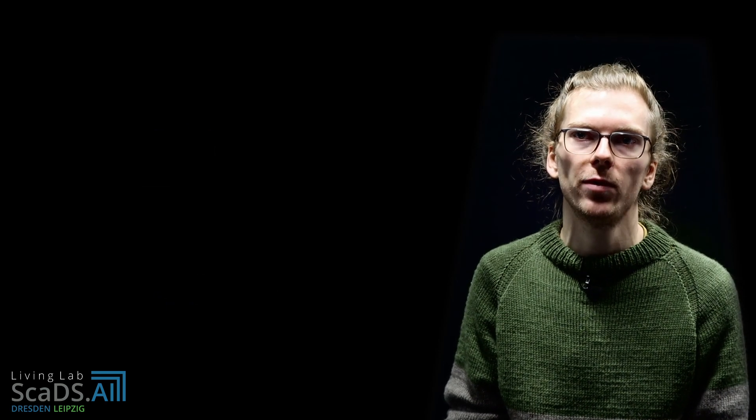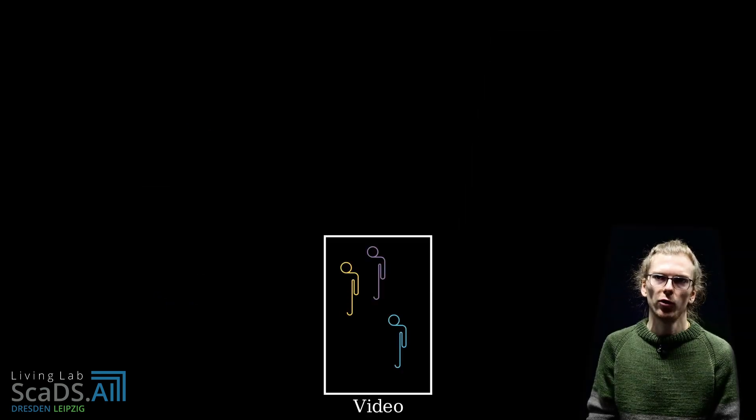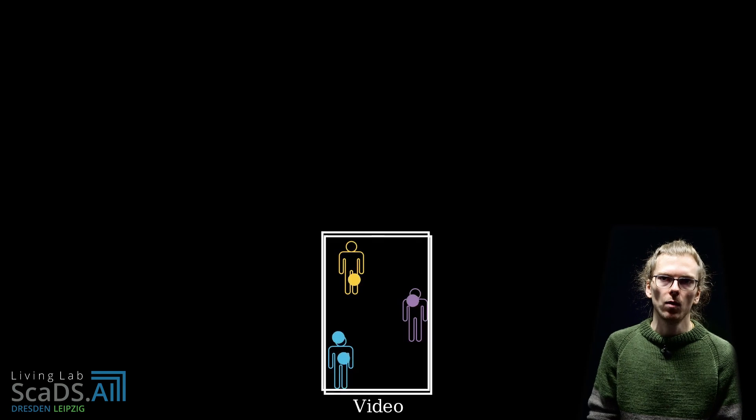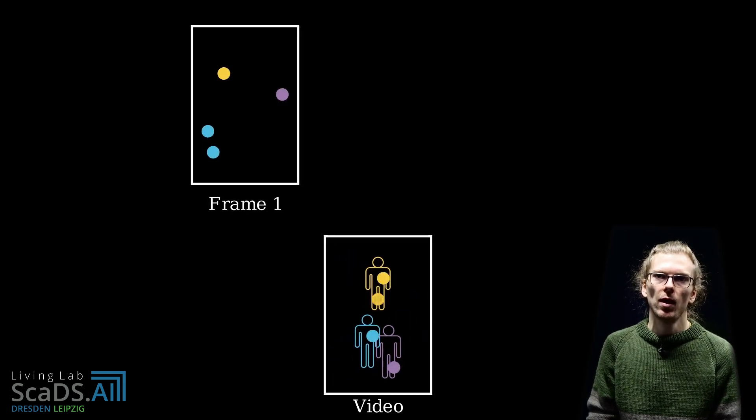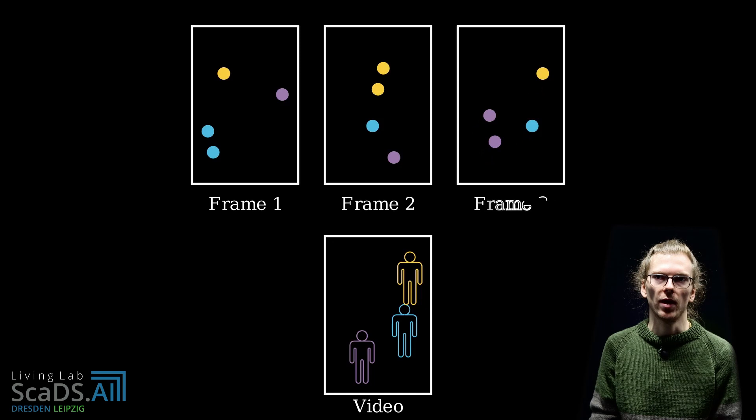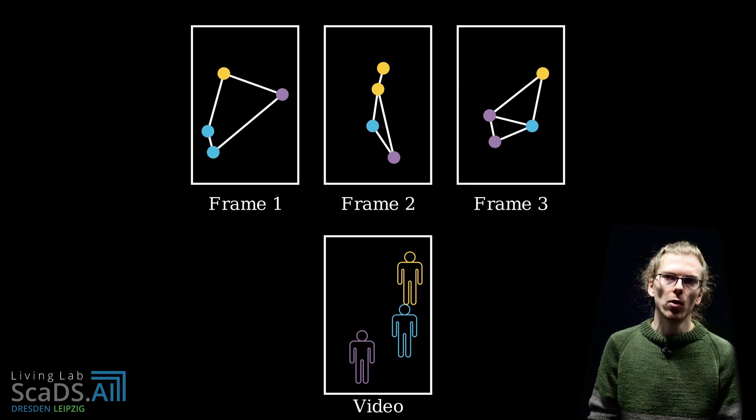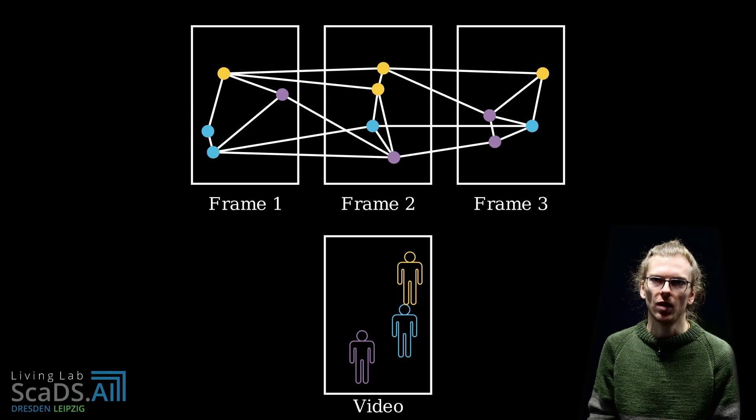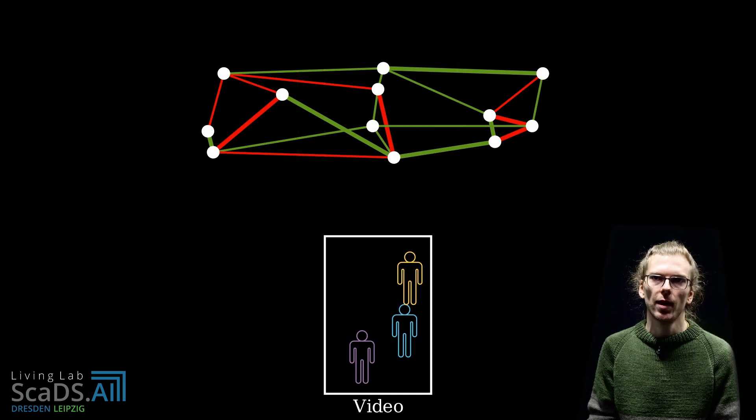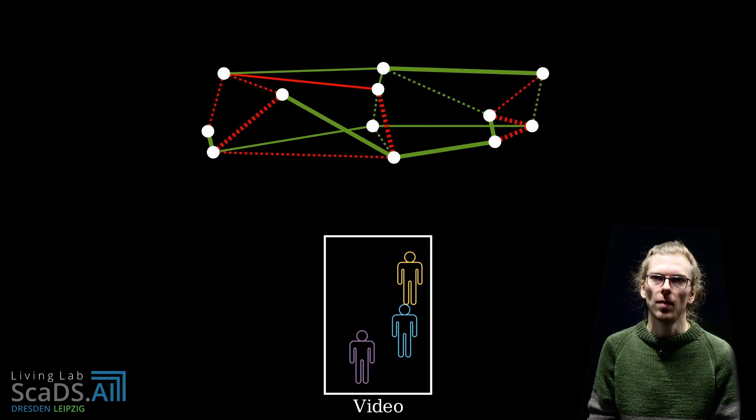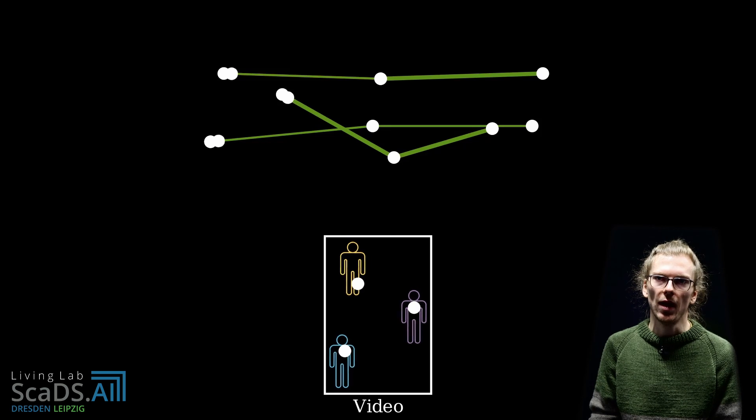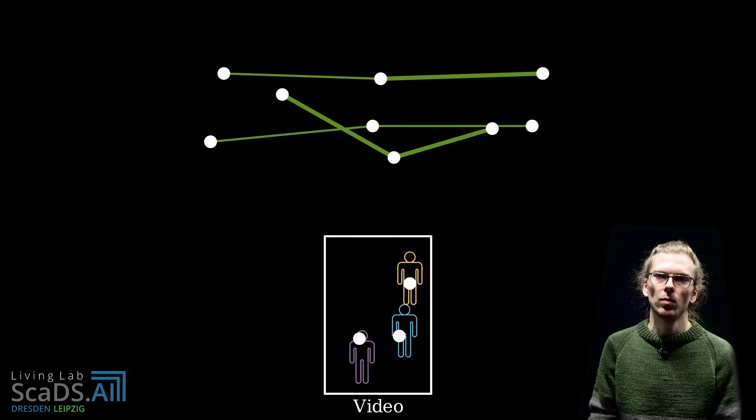Another application can be found in multiple object tracking. In the first step, one uses some method for detecting objects in a video. Then we construct the graph where each detection is a vertex and detections that are close to one another, both in location and time, are connected by an edge. The machine learning model is used to estimate for a pair of detections how likely it is that they belong to the same object. These likelihoods can then be used to compute the costs of the multi-cut problem. And then, solving the multi-cut problem yields a clustering of the detections where detections belonging to the same object are in the same cluster.